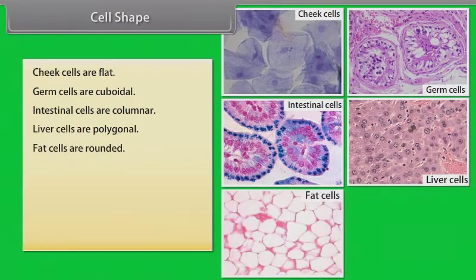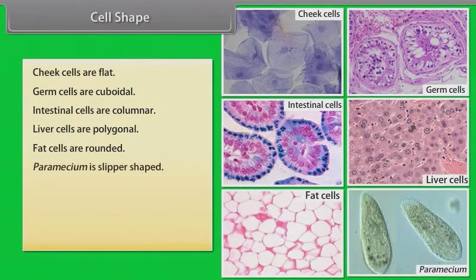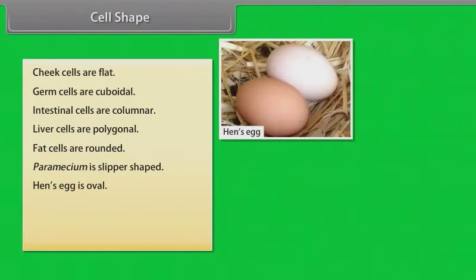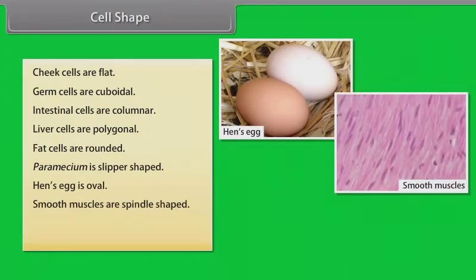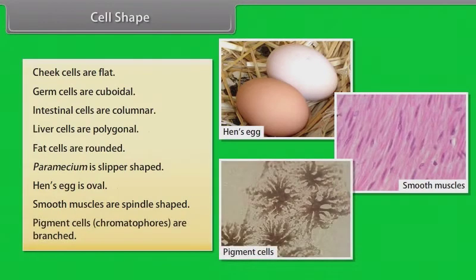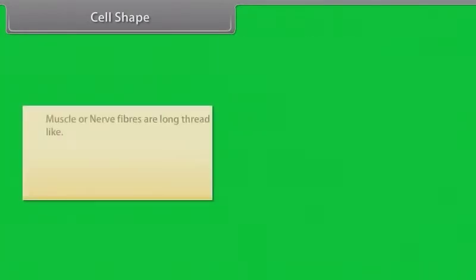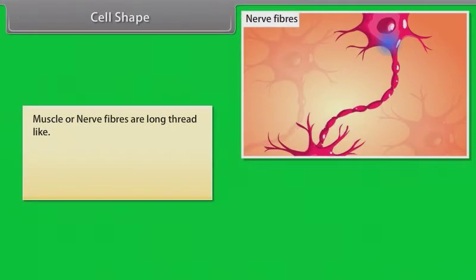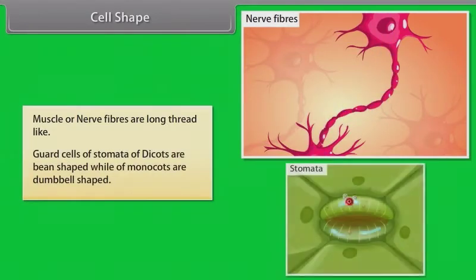Fat cells are rounded. Paramecium is slipper-shaped. The egg is oval. Smooth muscles are spindle-shaped. Pigment cells, i.e. chromatophores, are branched. Muscles or nerve fibers are long and thread-like. Guard cells of stomata of dicots are bean-shaped, while those of monocots are dumbbell-shaped.